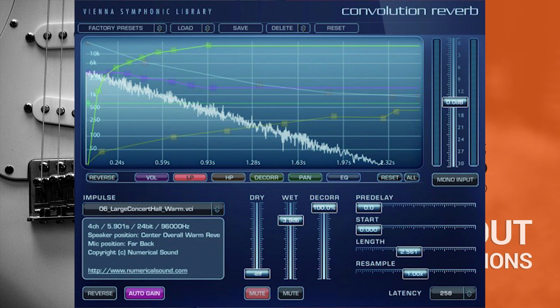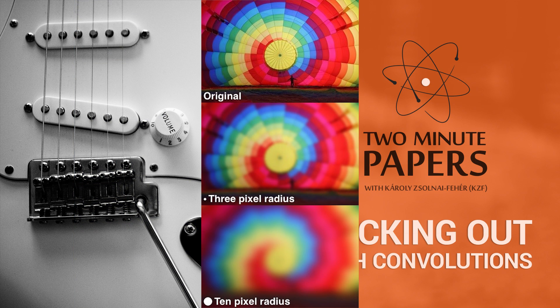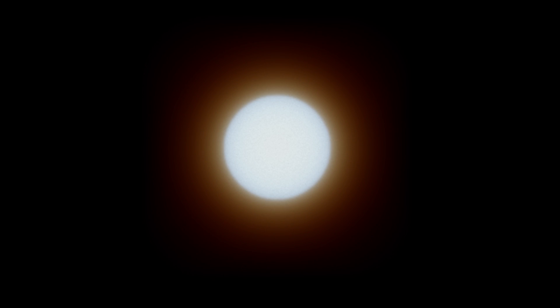People use the living hell out of convolution reverberation plugins in the music industry. Convolutions can also be used to blur or sharpen an image. We also had many examples of convolutional neural networks that provide efficient means to, for instance, get machines to recognize traffic signs. We can also use them to add sophisticated light transport effects such as subsurface scattering to images, conjuring up digital characters with stunningly high quality skin and other translucent materials in our animations and computer games.